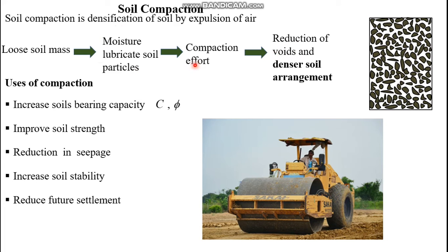For a loose soil mass, we add moisture — water — to lubricate soil particles so they can move freely within the soil mass and become easier to compact. We then apply static or dynamic compaction, which leads to a reduction of void space in the soil mass, resulting in a dense soil arrangement.